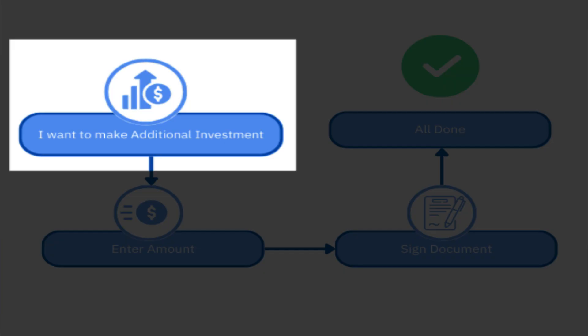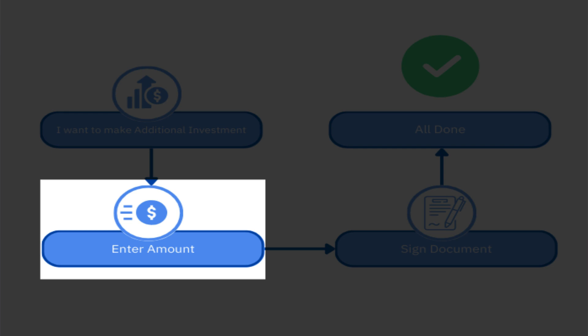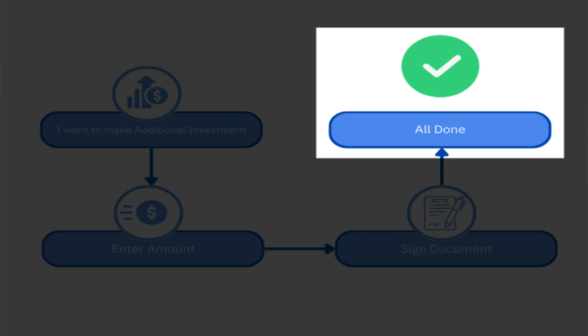An investor portal with embedded forms where clients can sign can change all of that. Say a client has invested $250,000 in your fund and — because you're killing it — now wants to invest another $200k. Instead of emailing customer service and waiting for someone to send an additional subscription form, the client simply goes to their portal, clicks 'I want to make an additional investment,' enters the amount, the document loads pre-filled, they sign it electronically — no waiting, no manual entry, just smooth automated operations.